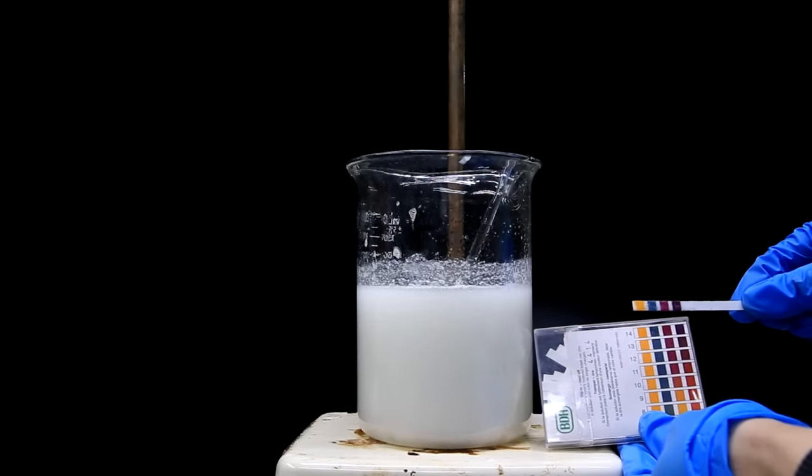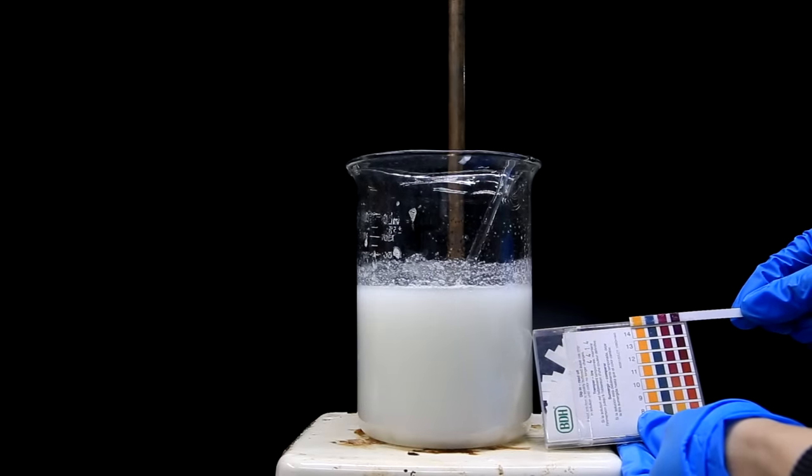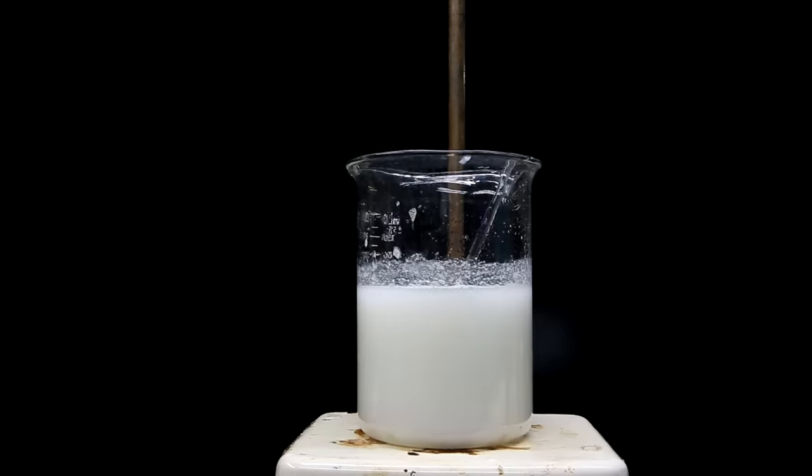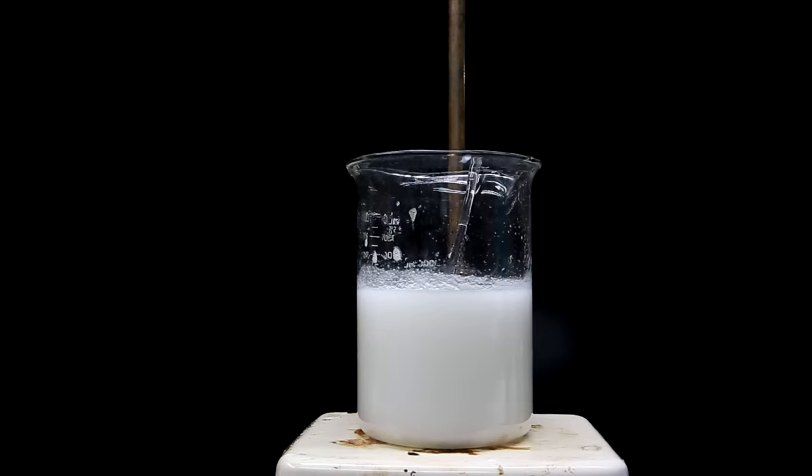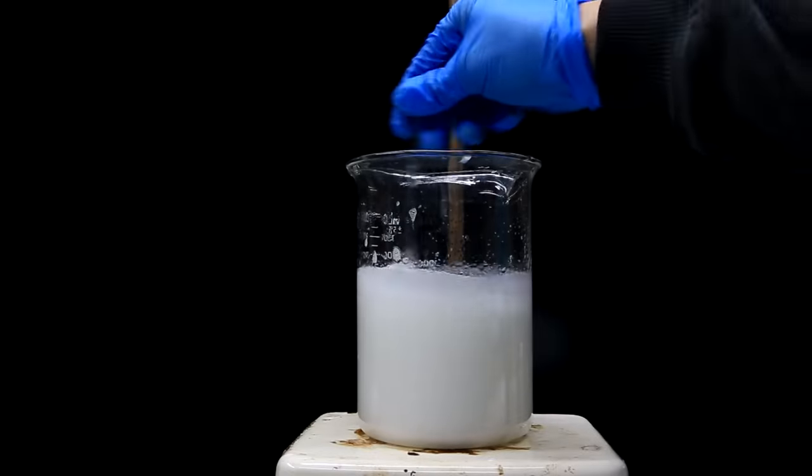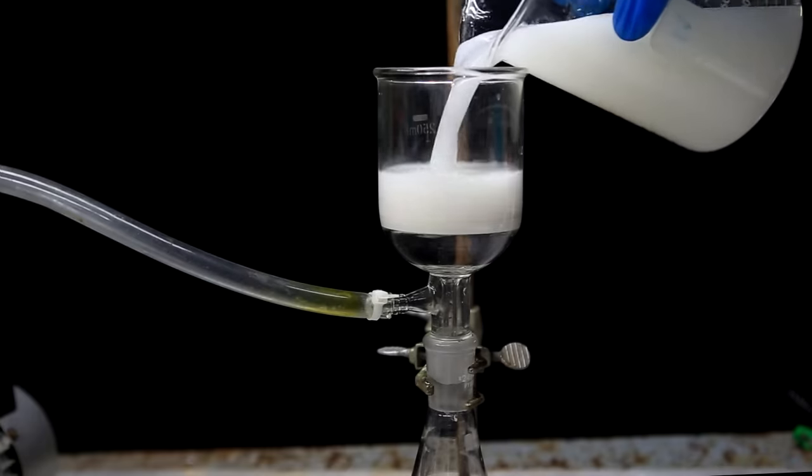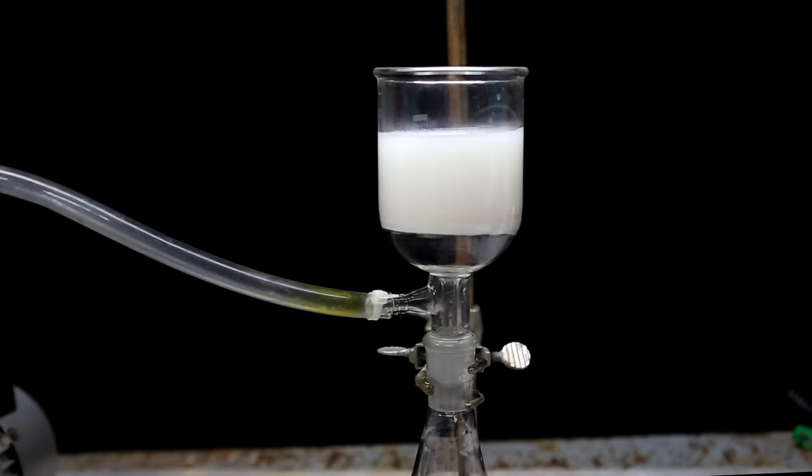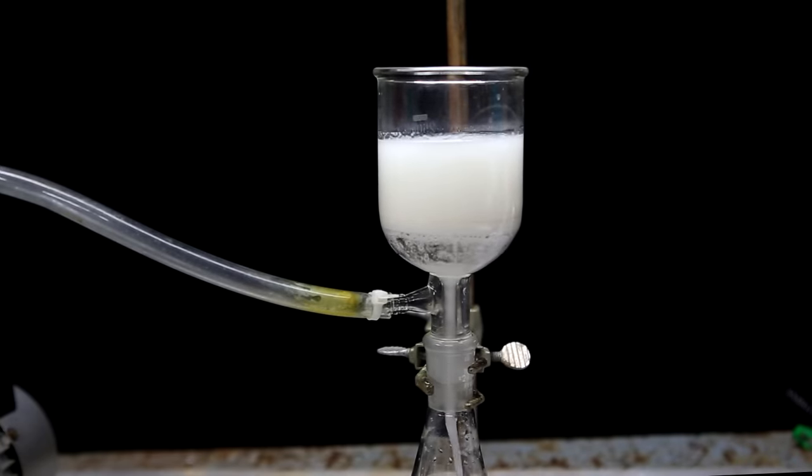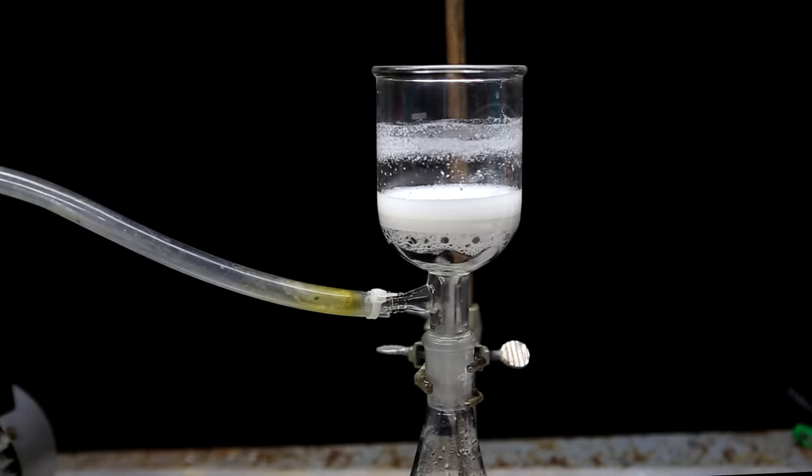So I keep adding sodium hydroxide and testing the pH until I get to around a pH of 14. Once the pH of 14 is achieved, almost all of the lidocaine should exist as the freebase. And now the lidocaine can be isolated by vacuum filtration. I would say a vacuum filter is really necessary for this because gravity filtration would just take forever.